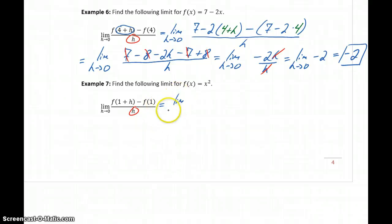In this case, we're taking the limit as h approaches 0 of x squared, where x is going to be 1 plus h, that quantity squared minus 1 squared, all over h.